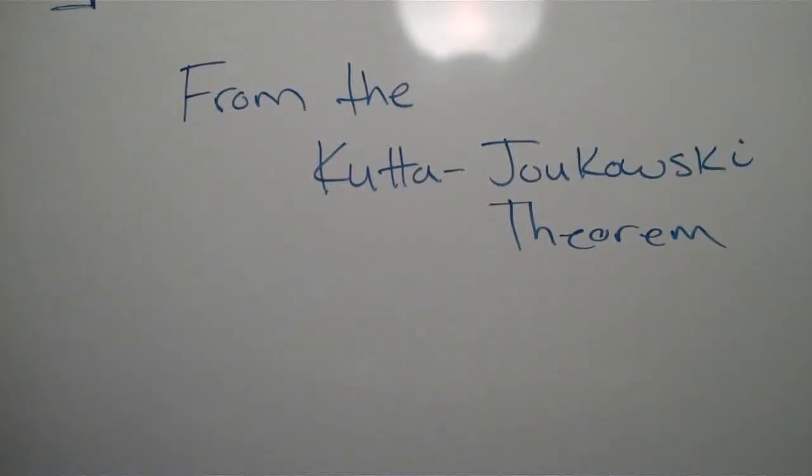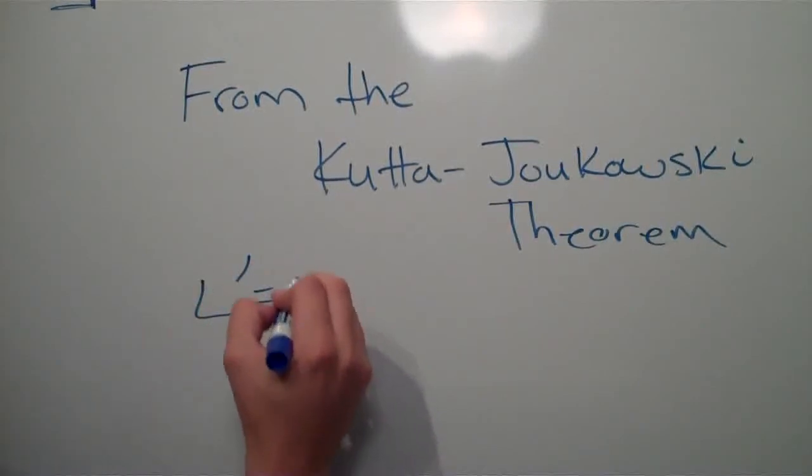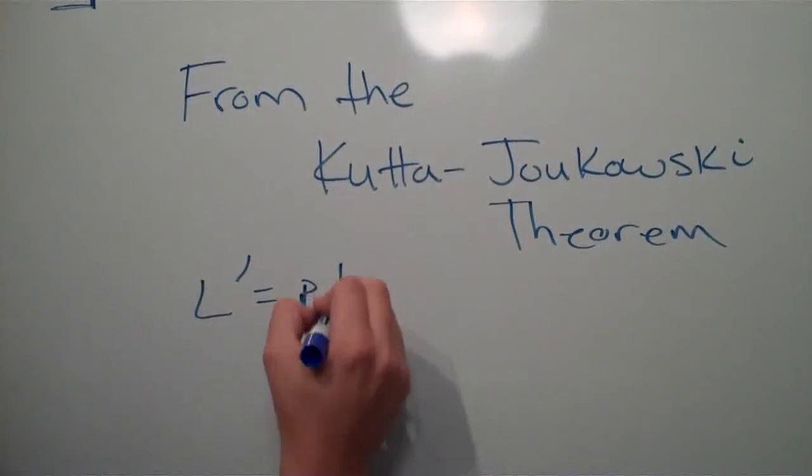From the Kutta-Joukowski theorem, we know lift per unit span equals density times vortex strength times free stream velocity.